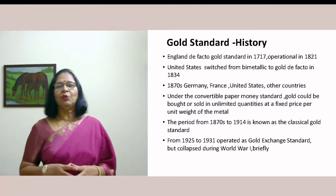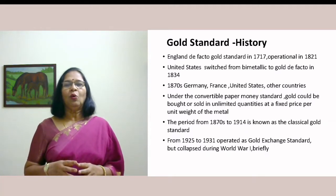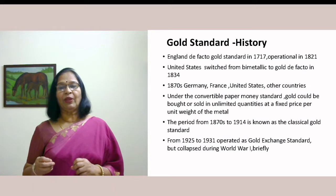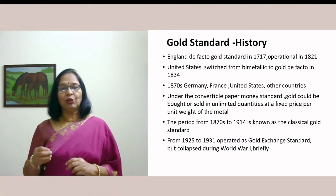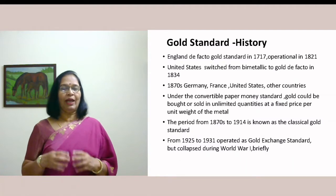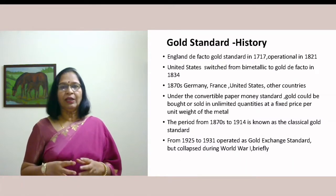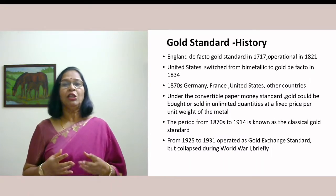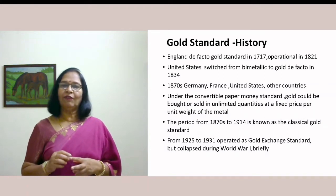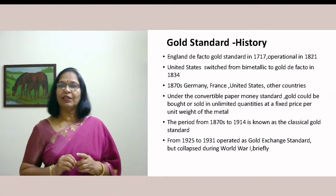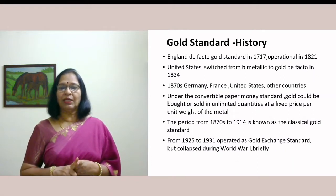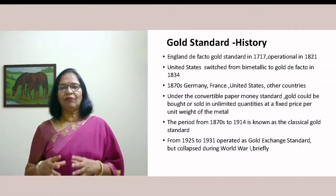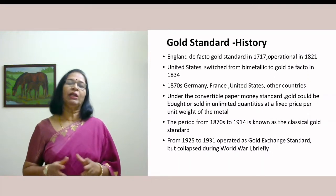To understand the gold standard, a brief history is important. England followed the de facto gold standard from 1717 and it actually became operational in 1821 when actual gold currency was in circulation. The USA was following the bimetallic standard — two currency metals, silver and gold — but gave up silver and operated only the gold standard de facto until 1834. Then in 1870, Germany, France, USA, and many other countries adopted the gold standard.